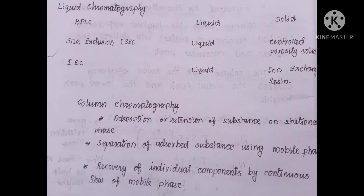In column chromatography, the stationary phase is solid — silica, alumina, or cellulose. For the mobile phase, a single solvent or two or more solvents can be used, and the composition can be changed or kept the same. Separation is based on adsorption of the analyte onto the stationary phase, and individual components are recovered by continuous flow of the mobile phase, eluting analytes based on their activity with the stationary phase.